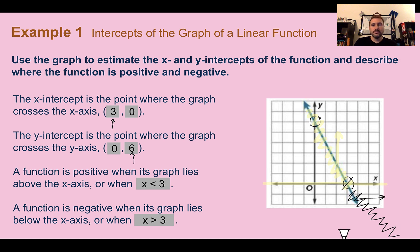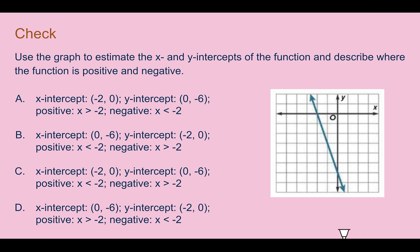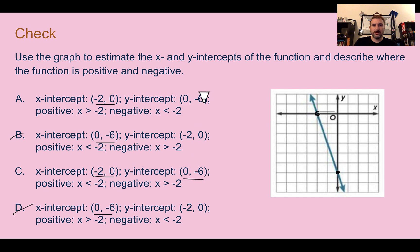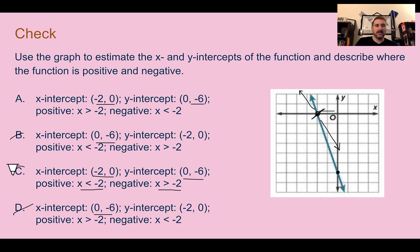Check your understanding: use the graph to estimate the intercepts and describe where it's positive and negative. The x-intercept is at (−2, 0) and the y-intercept is at (0, −6). The function switches at x = −2: it's positive when x is less than −2 and negative when x is greater than −2. The answer is C.